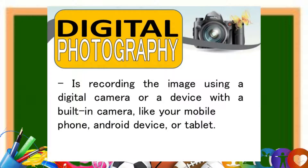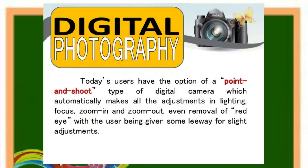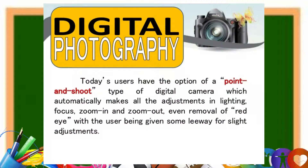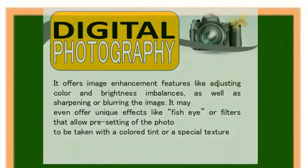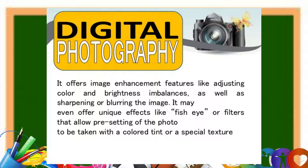Digital photography is recording an image using a digital camera or a device with a built-in camera, like your mobile phone, android device, or tablet. Today's users have the option of a point-and-shoot type of digital camera, which automatically makes all the adjustments in lighting, focus, zoom in and zoom out, and even removal of red-eye, with the user being given some leeway for slight adjustments. It also offers image enhancement features like adjusting color and brightness imbalances as well as sharpening or blurring the image.